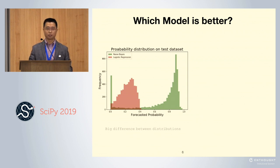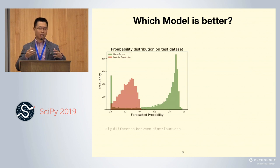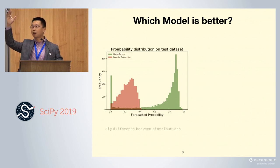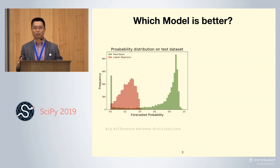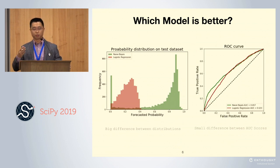They are quite different. Logistic regression doesn't have a single prediction higher than 0.5, and naive Bayes tries to push all the probabilities to the two ends. So the question is, which model is better? This is a tricky question. We need a metric to measure the forecasted probabilities and compare model performance. Let's first try the most popular one, the AUC score, which is used most in traditional classification problems. Here is our ROC curve.